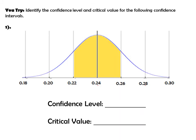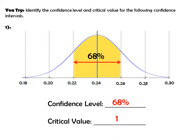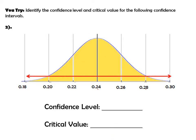Identify the confidence level and critical value for the following confidence intervals. The area shaded is approximately 68% of the data, which corresponds to our confidence level. We know that 68% is approximately one standard deviation away from the mean, so our critical value is one. In the next picture, the shaded area is approximately 99.7%, which is also our confidence level. We know 99.7% is within three standard deviations of the mean, so our critical value is three.